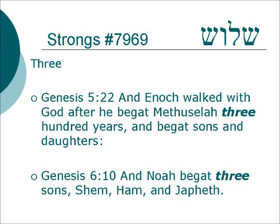Genesis 5:22 — And Enoch walked with God after he begat Methuselah three hundred years and begat sons and daughters. Genesis 6:10 — And Noah begat three sons: Shem, Cham, and Japheth.